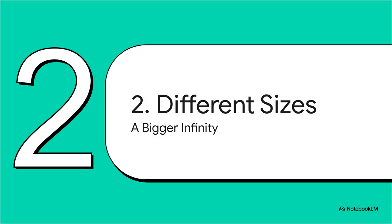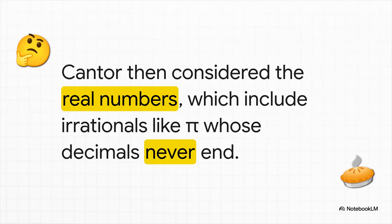But Cantor didn't stop there. Not by a long shot. He knew there were other kinds of numbers out there, ones that just didn't play by the same clean, simple rules. He turned his focus to what we call the real numbers. Now this group has all the countable numbers we just talked about, but it also includes what are called irrational numbers. You know, numbers with decimals that go on forever and ever without repeating, like pi or the square root of 2.